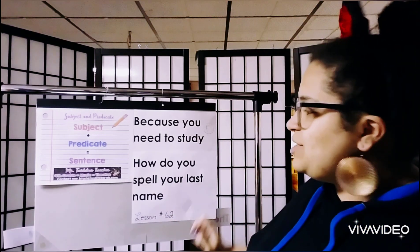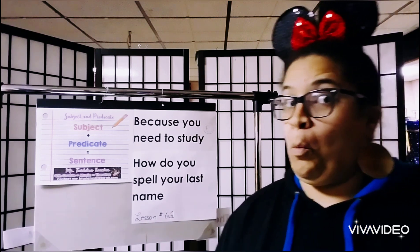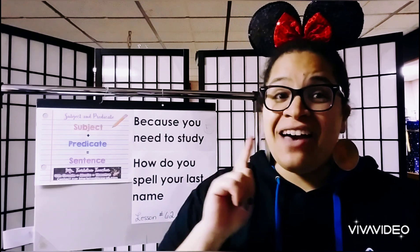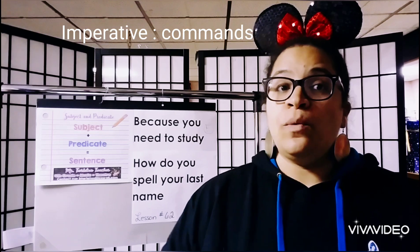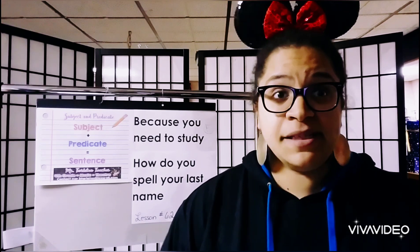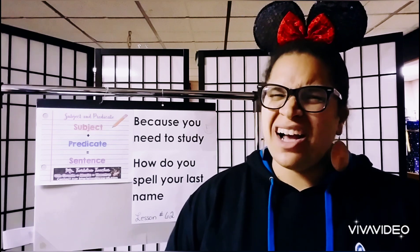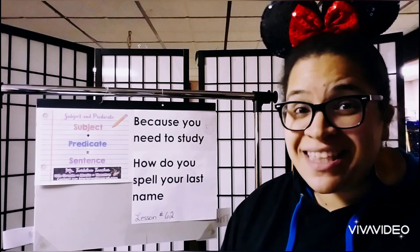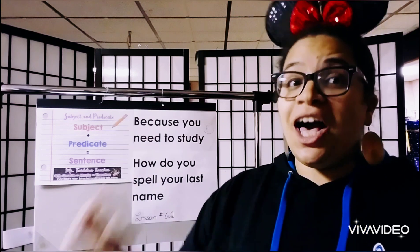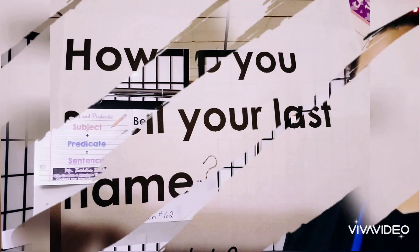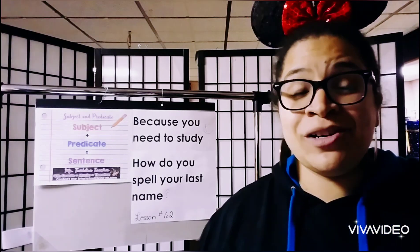Let's look at this next one: 'How do you spell your last name?' Sounds like a sentence. Let's review — we have four different types of sentences: a declarative sentence, which tells; an imperative sentence, which commands; an exclamatory sentence, which exclaims; and an interrogative sentence, which asks. 'How do you spell your last name?' is an interrogative sentence. So what do we put at the end? A question mark!